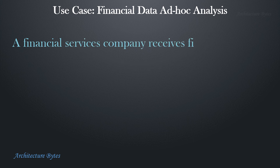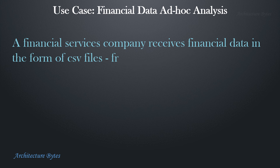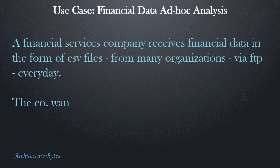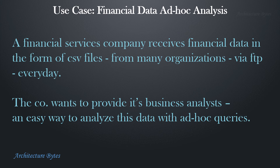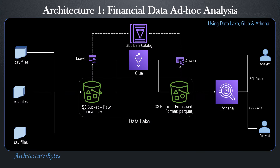Use case one: A financial services company receives financial data in the form of CSV files from many organizations via FTP every day. The company wants to provide its business analysts an easy way to analyze this data with ad-hoc queries. We have a data lake with two buckets — raw and processed. Incoming raw CSV files are saved in the S3 raw bucket. A Glue crawler crawls the raw and processed data buckets to create metadata tables in the Glue Data Catalog. A Glue job cleans and transforms the raw data to a storage and query-efficient format like Parquet and saves it in the processed bucket. Analysts can then run ad-hoc queries using Athena against the financial data in the processed bucket.